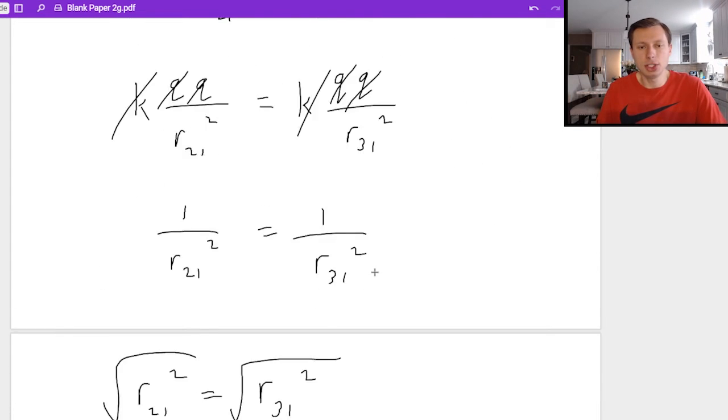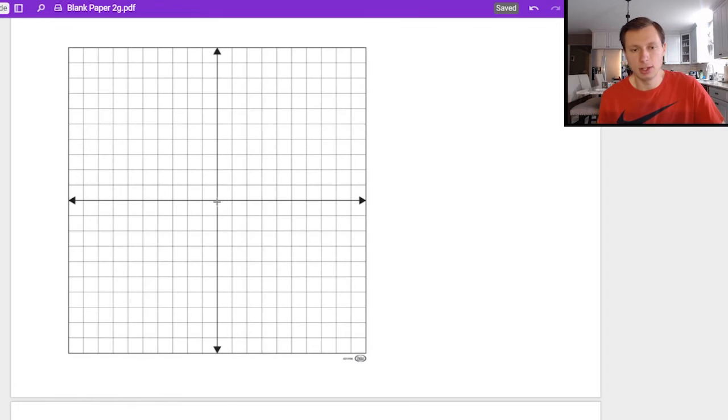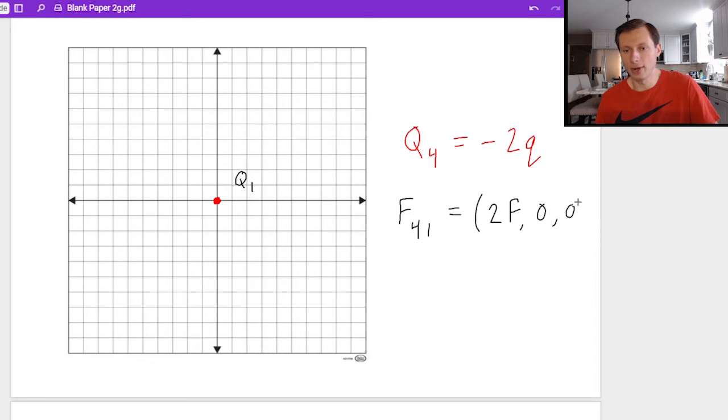And now let's just do one more. Again, here's my coordinate grid with q one at the center. Now I want to know where should I add charge q four, where q four is equal to negative two q. And I want the force from charge four on charge one to equal two f in the x direction, zero in the y direction, and zero in the z direction. So first, again, I'm going to ask myself, where should q four be placed?